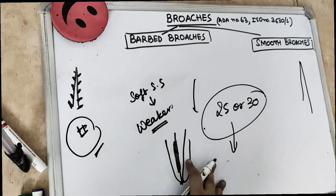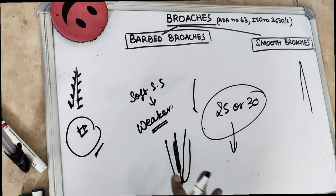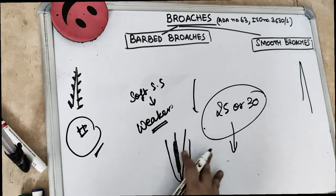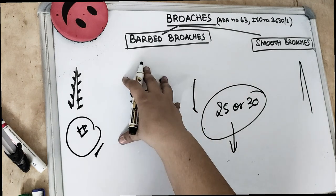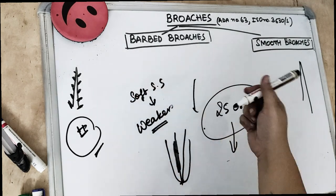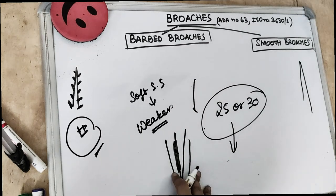then and only then we can use these barbed broaches. So first the K file is used to extirpate the pulp. And then when it is flexible enough to follow the root canal, then this stiff instrument, then this barbed broach should be inserted in order to extirpate the canal.